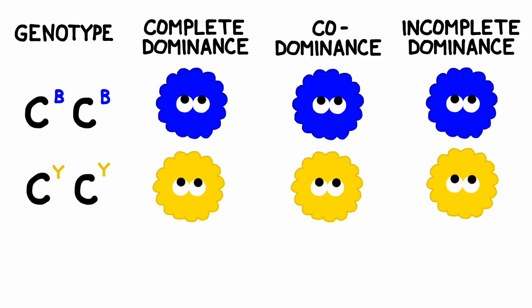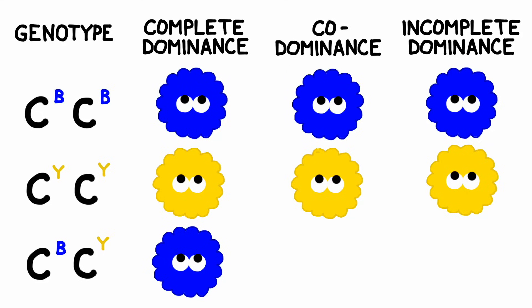But what about hybrid organisms? The genotype for hybrid offspring is going to be C^B C^Y, and this is often where we see really interesting trait combinations pop up. If the coat color showed complete dominance of blue over yellow, the resulting hybrid offspring would be blue — only the blue allele from the genotype would be expressed in the phenotype.